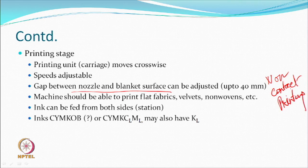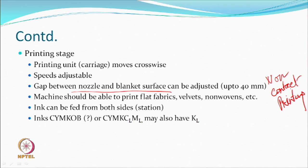Machines can print flat fabrics, velvets, non-wovens, and so on. Ink must be replenished as it is consumed, and ink can be fed from both sides of the carriage system. Color options include six-color systems (C, Y, M, K plus orange and blue), or C, Y, M, K with light cyan and light magenta, or systems with light black moving toward gray. Eight-color systems are now considered common.